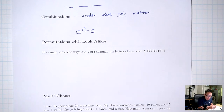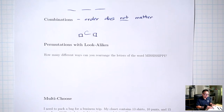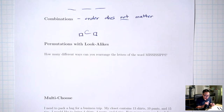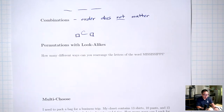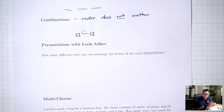I also have S's that are repeated and P's that are repeated. Even though swapping the M and the I counts as two different arrangements because it looks different, if I swap two of the look-alikes — for example, if I swap the two S's — I don't get anything new. It looks exactly the same. So we have to take into account those situations.